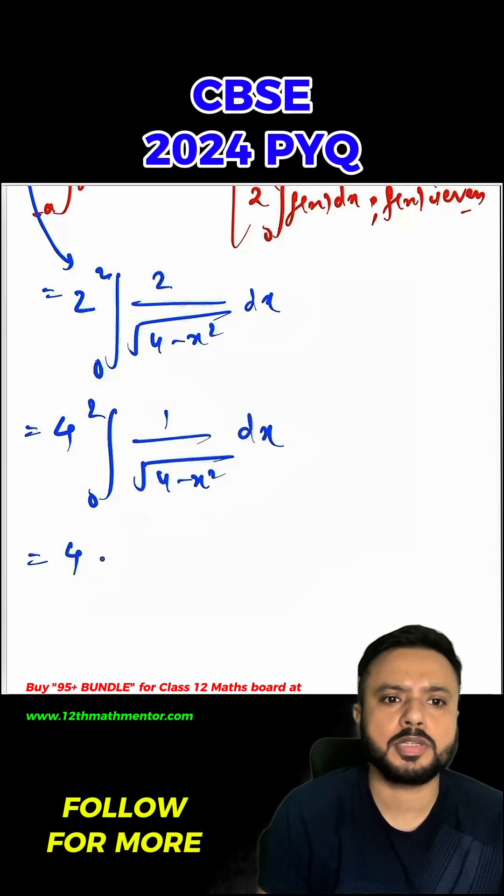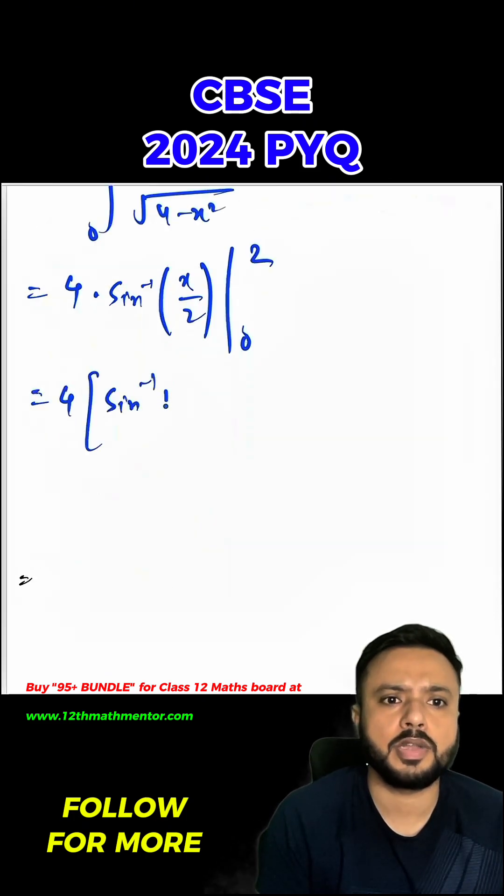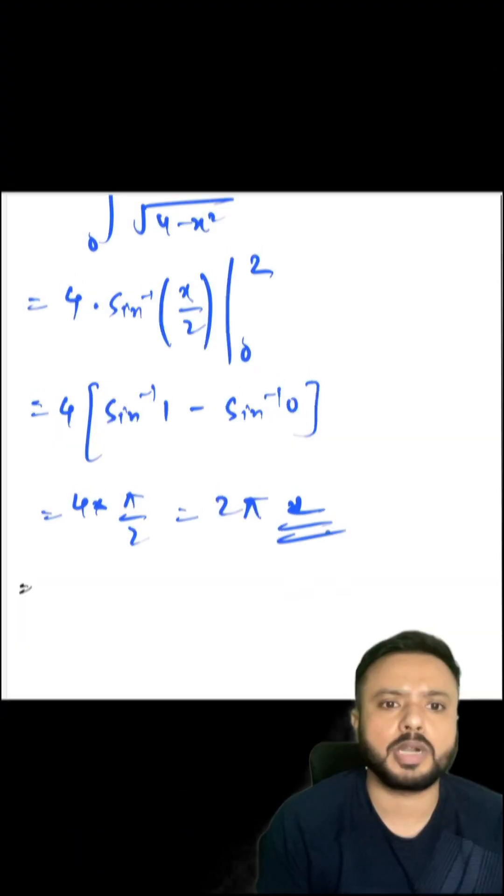So 1 by under root of a square minus x square, the formula is sine inverse x by a from 0 to 2. We'll substitute the limits to get 4 sine inverse 1 minus sine inverse 0, which is 4 times pi by 2, which means 2 pi. So this is my desired answer.